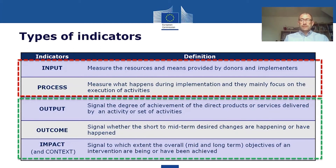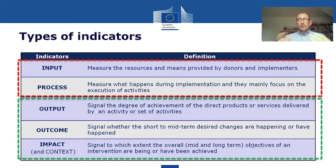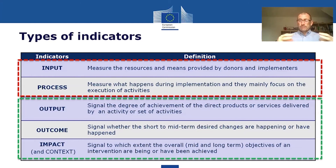Output indicators signal the degree of achievement of the direct products or services delivered by an activity or set of activities. They tell us whether the things the project said it would put in place have been put in place, or how close we are. They tend to be quite binary: the hospital has been built, 250 people have been trained, the IT system has been installed and is now working.